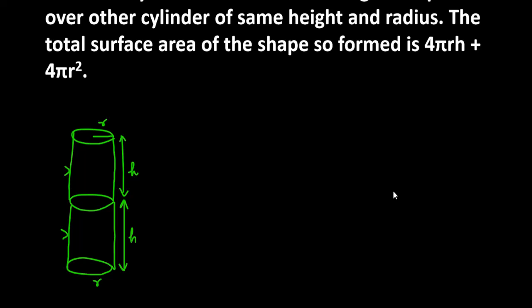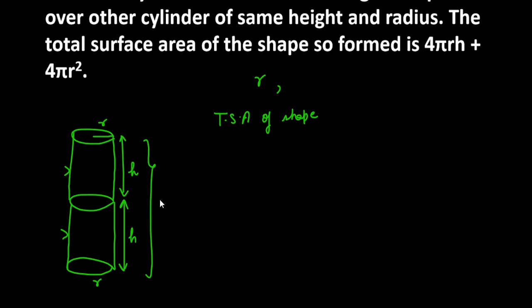We can find the total surface area of this shape by treating it as a new single big cylinder. The radius r remains the same. But if you see the height, the combined height will be 2h. And what is the TSA formula for a cylinder?